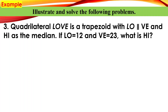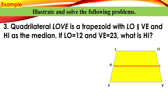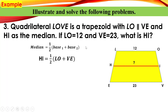Example number three: quadrilateral LOVE is a trapezoid with LO parallel to VE, and HI is the median. If LO is 12 and VE is 23, what is HI? What we are looking for is the median. To find the median: median equals one-half times (base 1 plus base 2), the sum of the bases divided by 2.